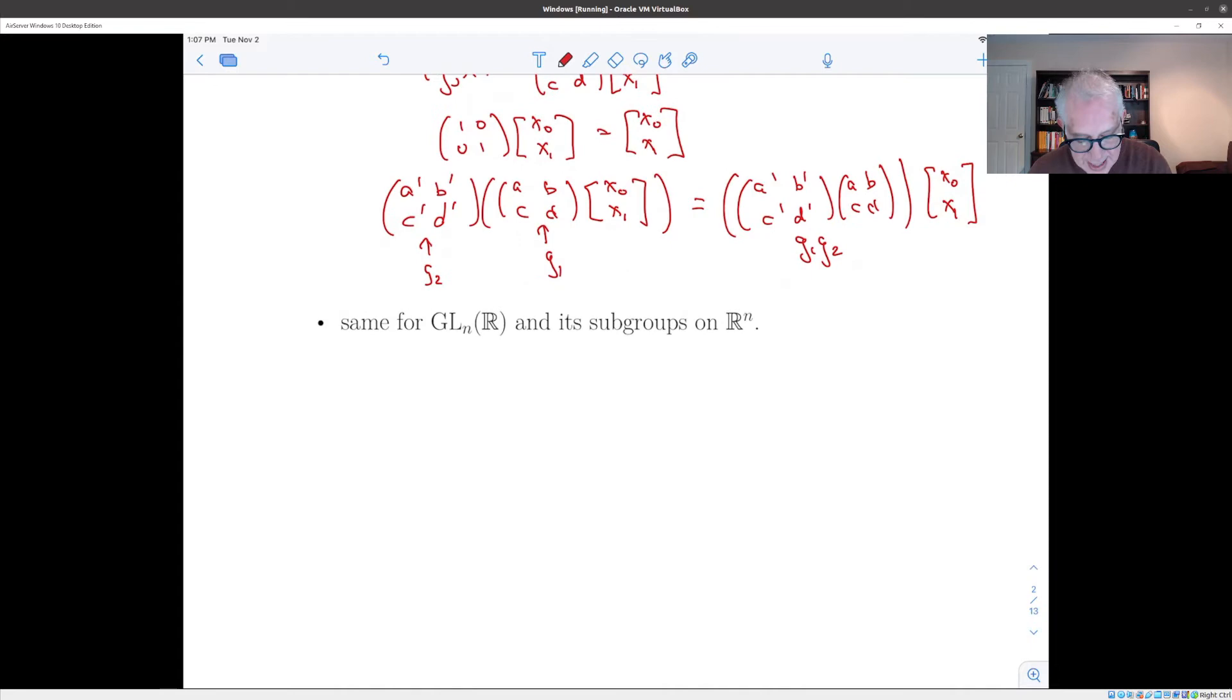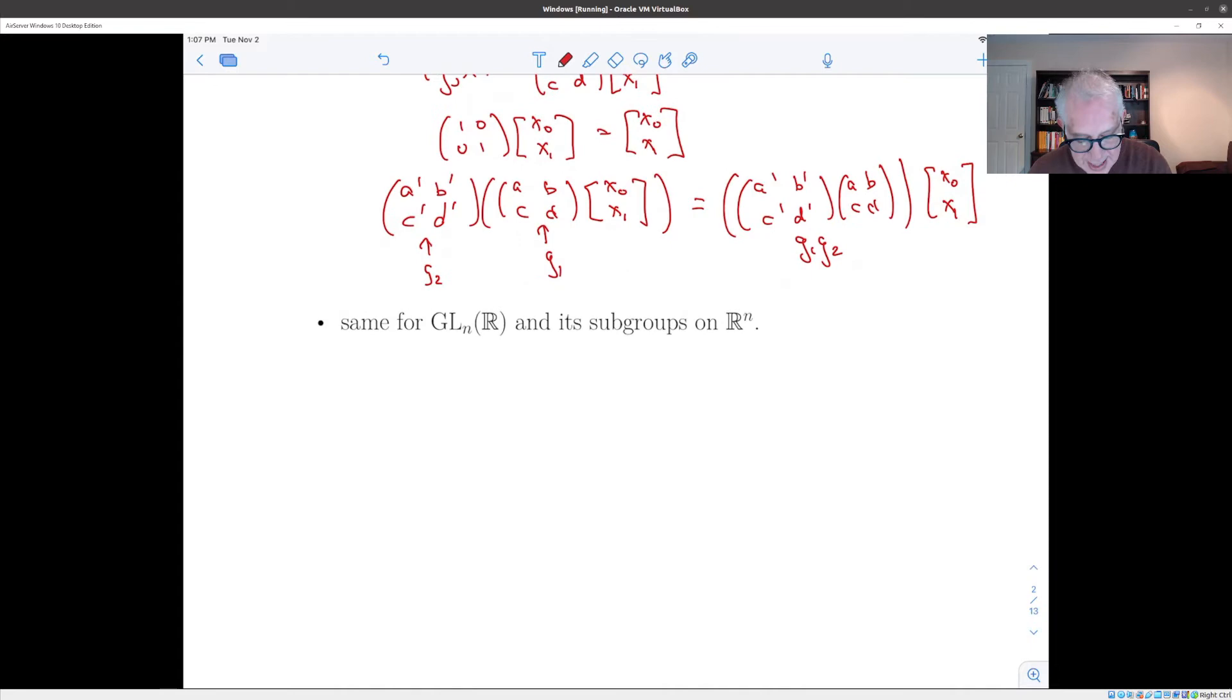the action of matrices on vectors is an example of a group action. And I did this here for GL_2, but I could have done it for GL_n on n vectors. And also, if you have a subgroup H in GL_n(R),